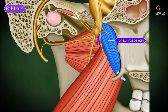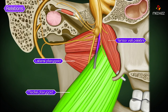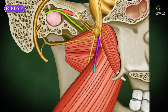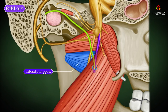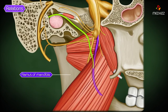In its relations, the lingual nerve runs first between the tensor veli palatinae and the lateral pterygoid, and then between the lateral and medial pterygoids. About two centimeters below the skull, it is joined by the chorda tympani nerve emerging at the lower border of the lateral pterygoid. The nerve then runs downwards and forwards between the ramus of the mandible and the medial pterygoid.